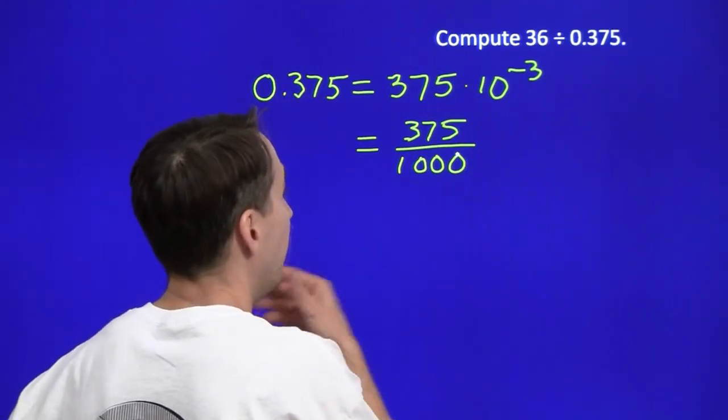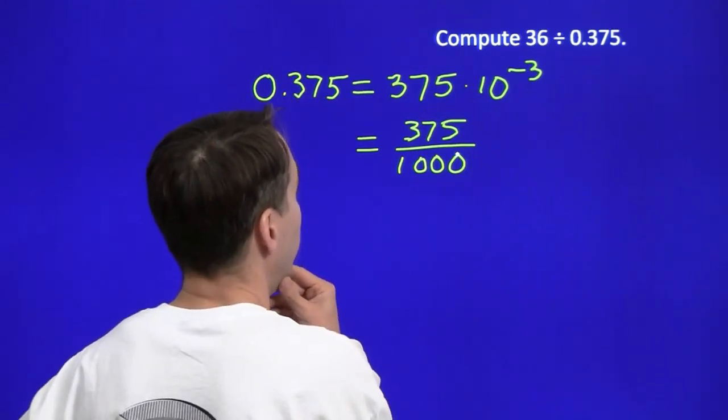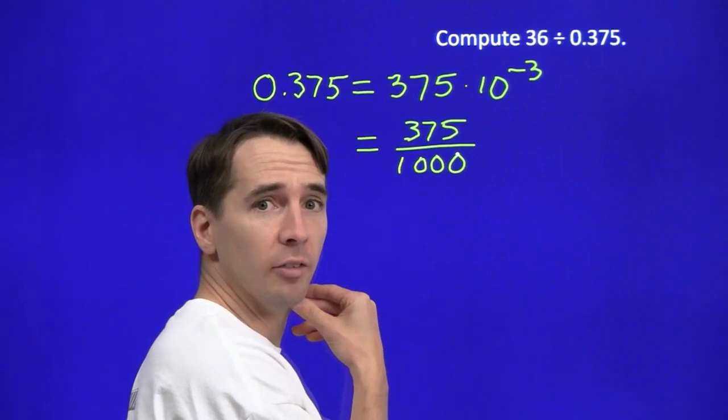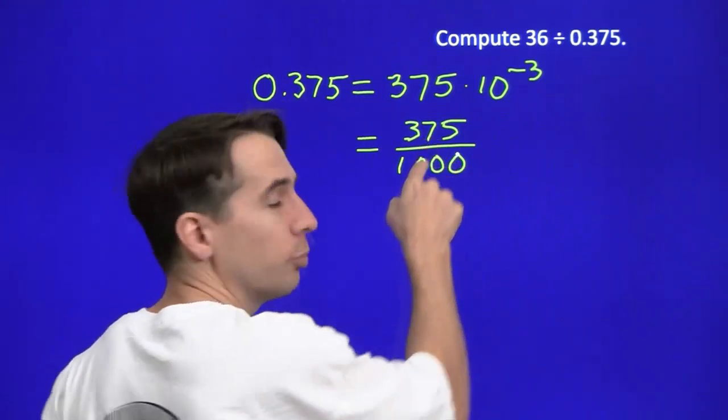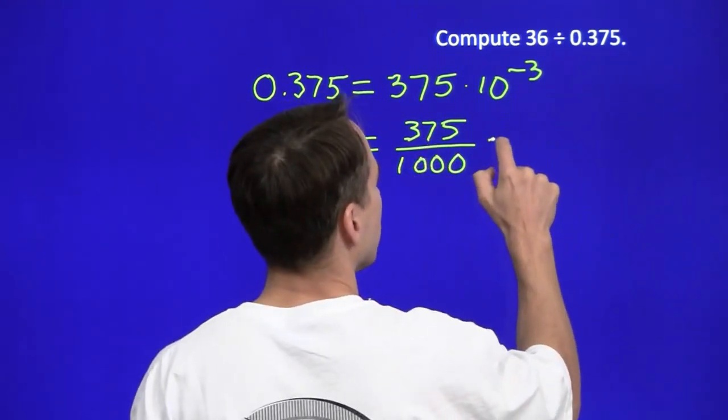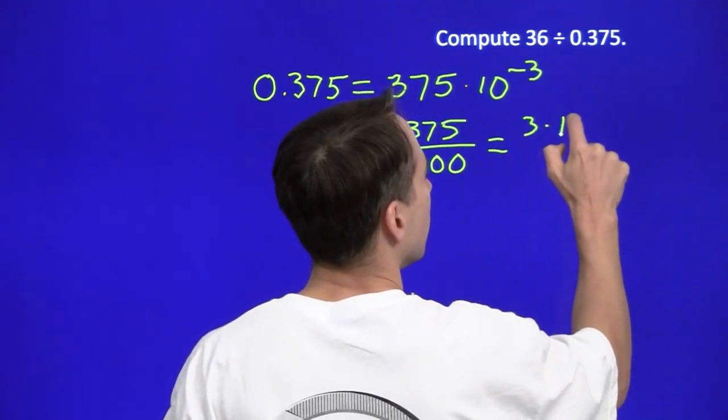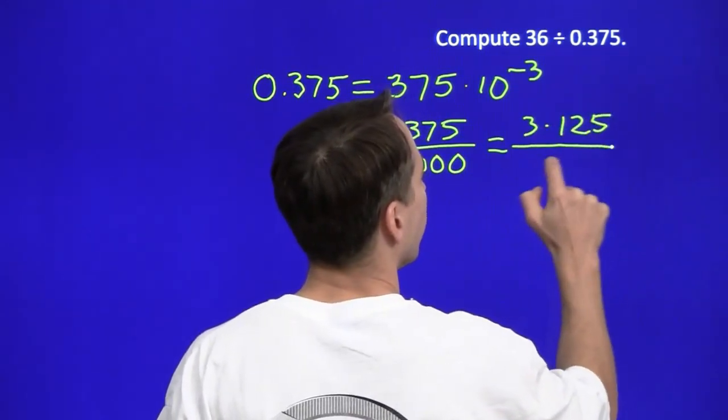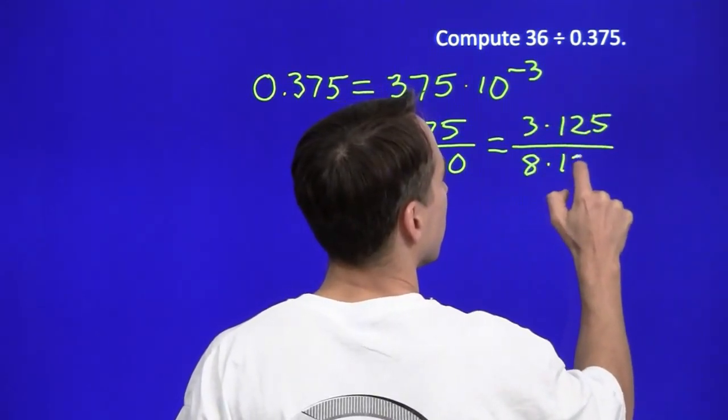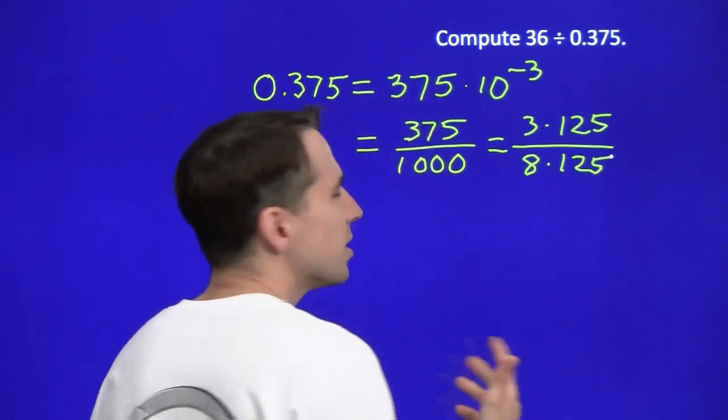So how can we simplify that? Well, I see a factor of 125. 125 goes into 375 three times. And it goes into 1,000 eight times.